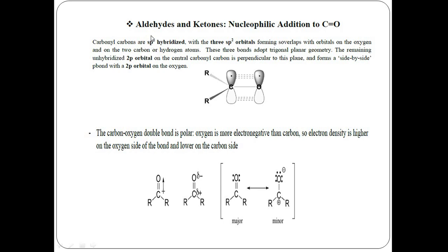Carbonyl compounds are basically sp2 hybridized, with three sp2 hybridized orbitals forming an overlap with the orbitals on the oxygen, on the top two carbon atoms and one hydrogen atom. This carbonyl functional group is attached with its p orbital, and there will be an overlapping between the p orbitals of the oxygen atom and the carbon atom, forming a side-by-side pi bond.